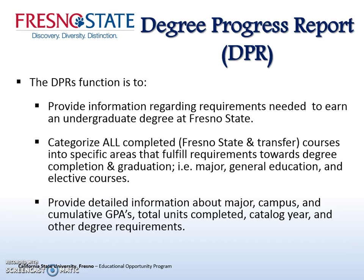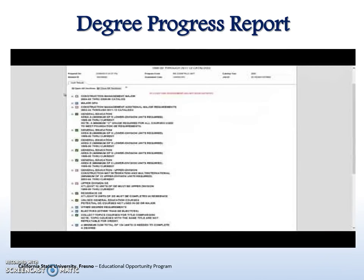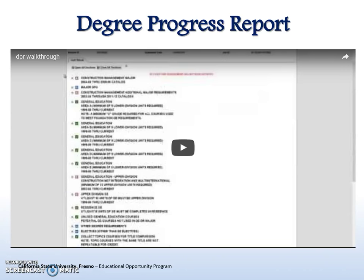It also outlines total units completed, catalog year, and other degree requirements. Let's learn how to access the DPR and what some of the symbols on the DPR mean by watching this short tutorial.